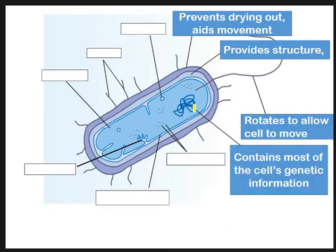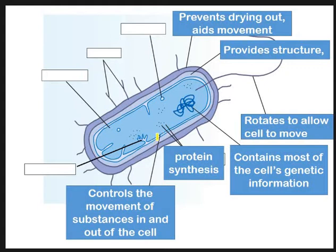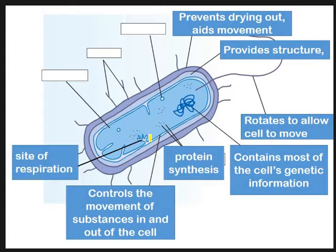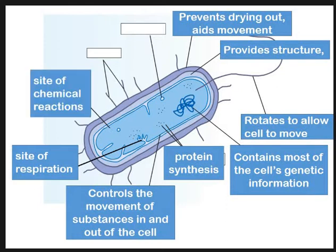Then we have the nucleoid, which is our genetic material. The 70S ribosomes are for protein synthesis. The cell membrane - the inner layer - controls what enters and exits the cell, as it does in a eukaryotic cell. That cell membrane then folds in to form the mesosome, which is the site of respiration. Then we've got cytoplasm, the jelly-like matrix found inside all cells, which is the site of chemical reactions such as glycolysis.